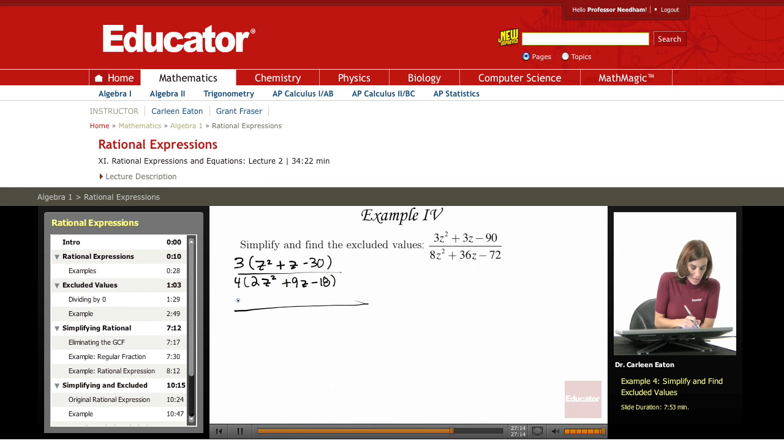Factoring. So the numerator has a leading coefficient of 1, so that one's a little bit simpler to factor. And I know that I have a negative here, so it's going to be z minus something times z plus something.